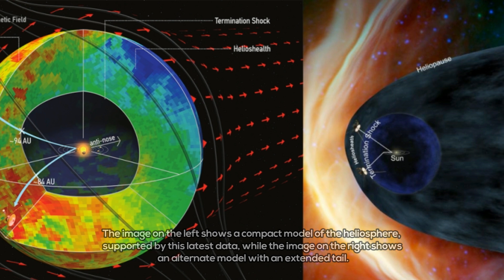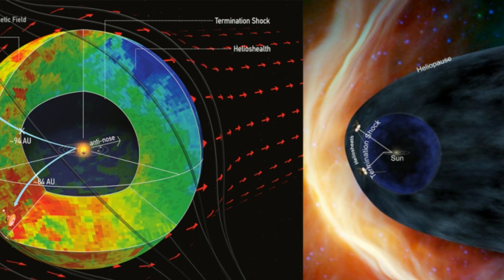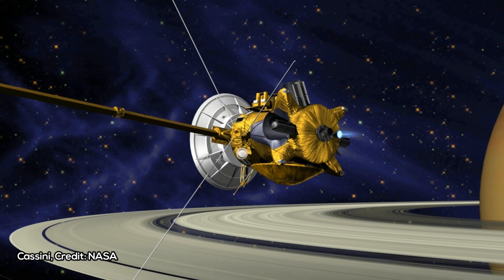The Sun releases a constant outflow of magnetic solar material, called the solar wind, that fills the inner solar system, reaching far past the orbit of Neptune. This solar wind creates a bubble, some 23 billion miles across, called the heliosphere.